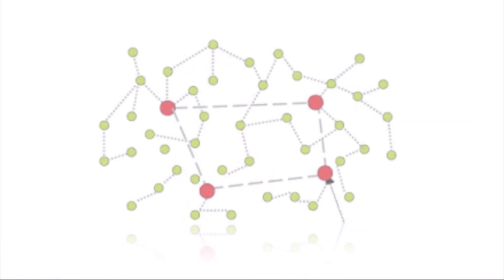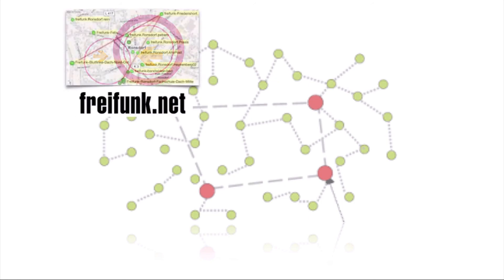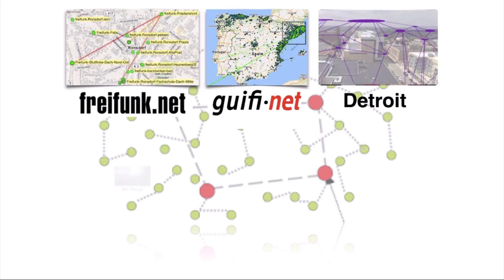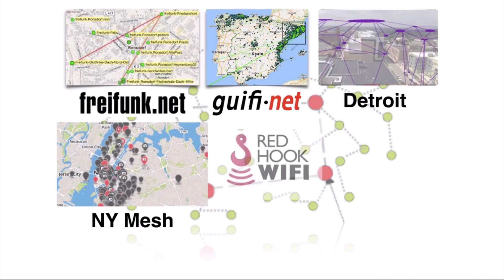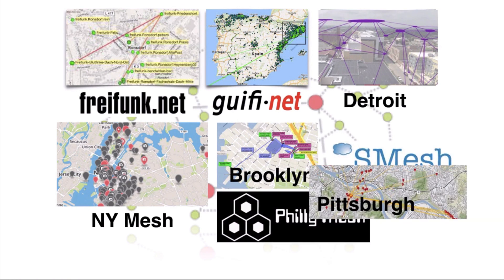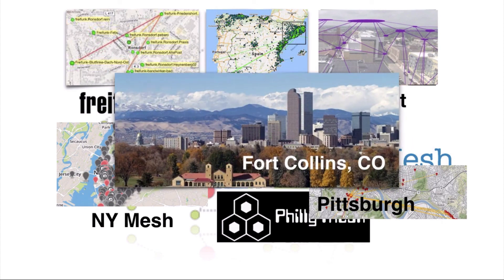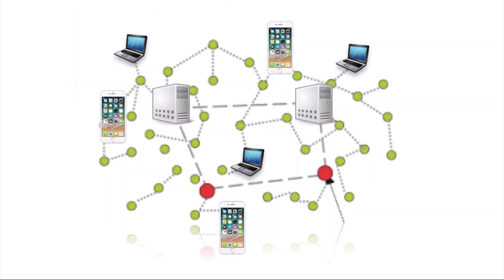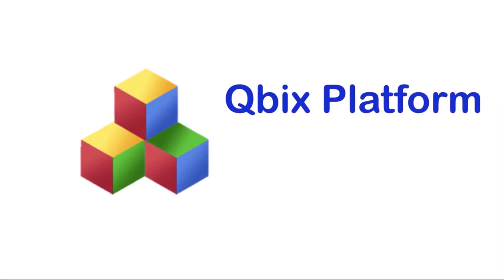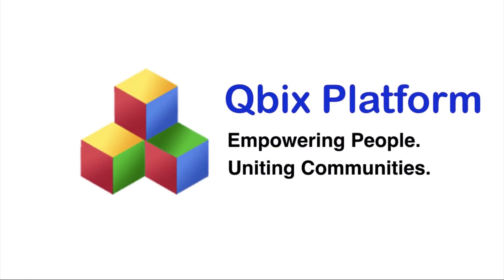Many cities around the world are building their own mesh networks to connect their citizens: Freifunk in Germany, Guifi in Spain, Digital Stewards in Detroit, NYC Wireless in New York, Red Hook Wi-Fi in Brooklyn, Philadelphia, Baltimore, Pittsburgh, and many others. And now, in the wake of the net neutrality debacle, Fort Collins, Colorado is planning to launch its own municipal broadband. They will need software to run on these local networks — that's what we built. Cubix platform: empowering people, uniting communities.